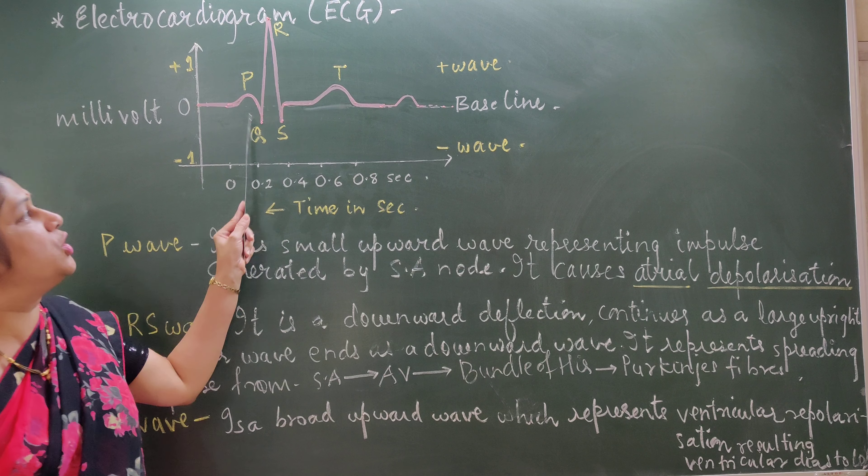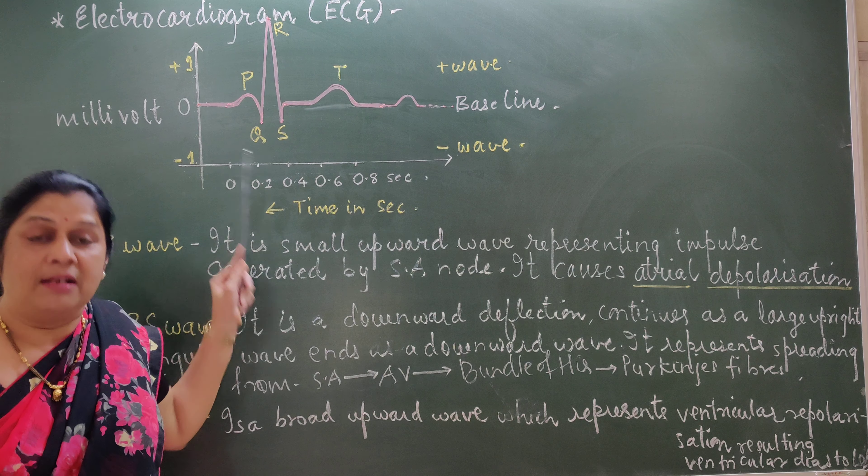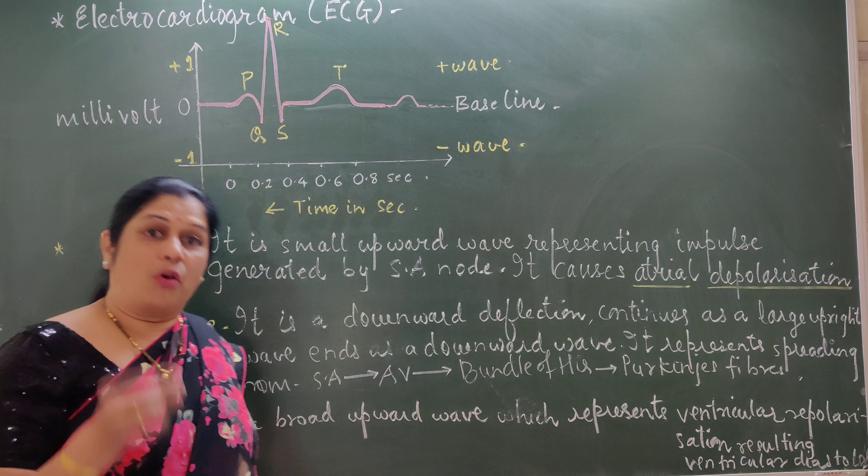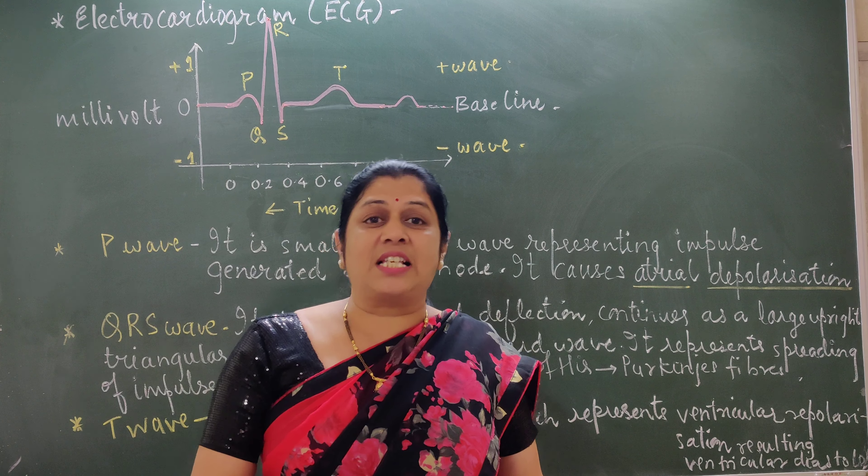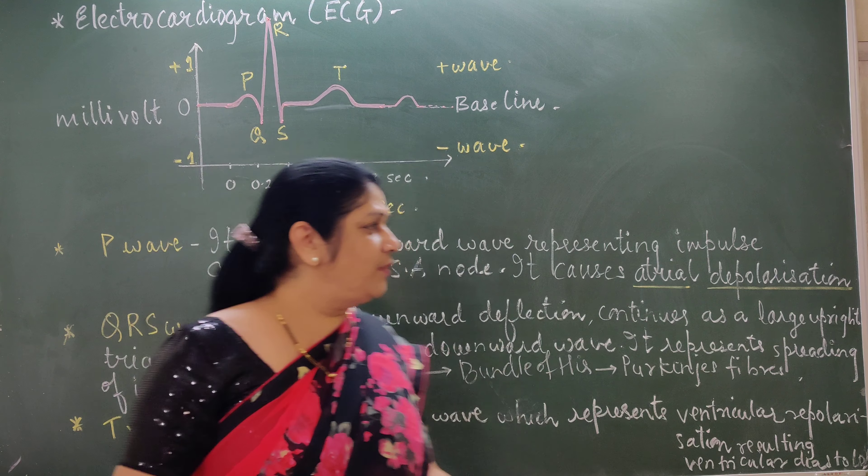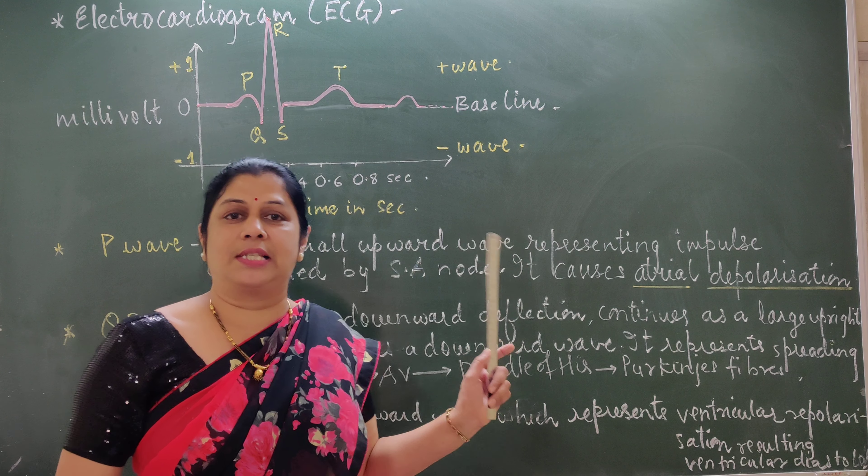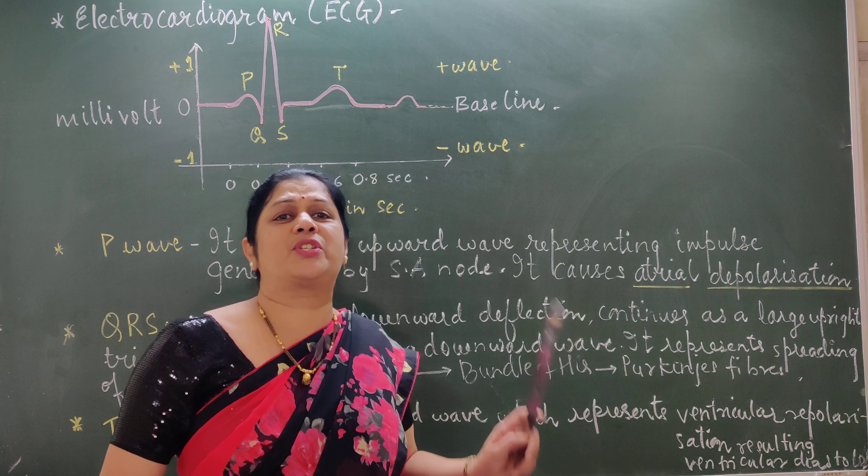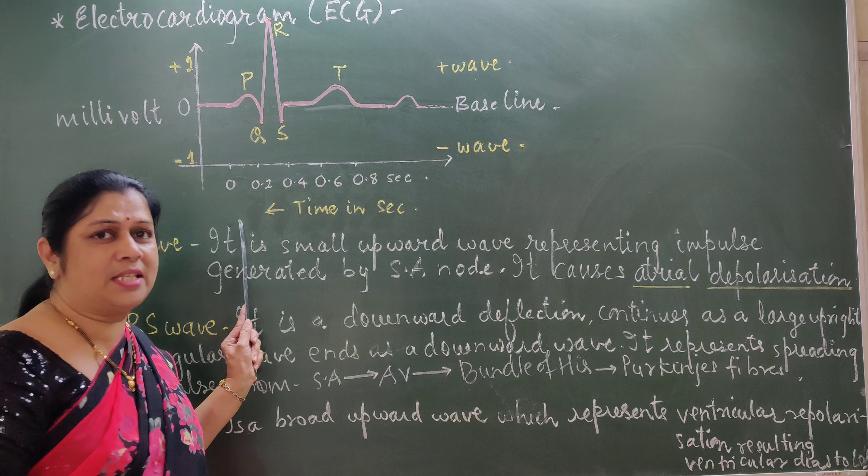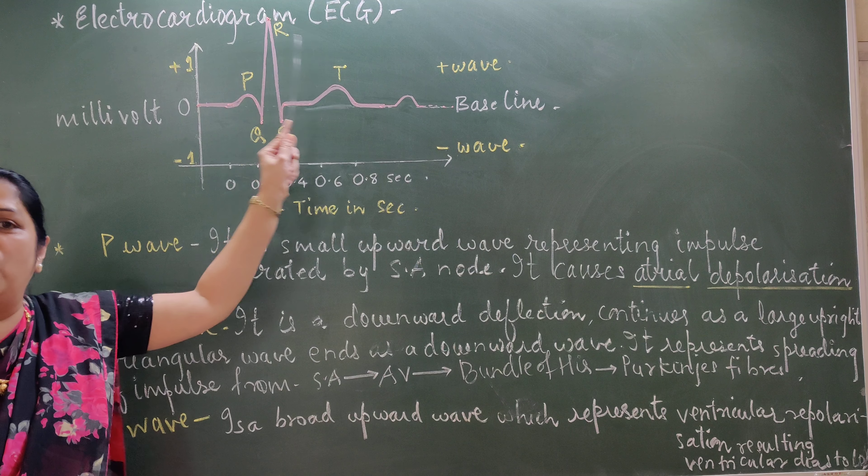And here, this is used to find out actually where the abnormalities are. Is there anything wrong in SA node as a pacemaker? Is there something wrong in AV node as a pace setter? Or otherwise, what is the condition of the heart muscles, the cardiac muscles, the nodal tissue? So, that can be studied with the help of this device, the machinery that is called electrocardiogram.